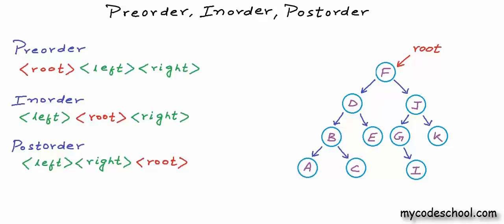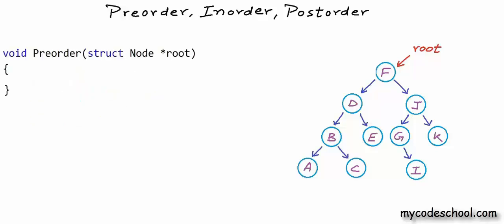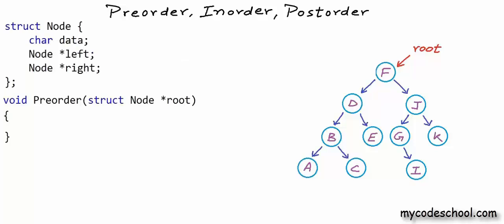Let's first see the code for pre-order traversal. In pre-order traversal, we first visit the root, then the left sub-tree, then the right sub-tree. I want to write a function that takes a pointer or reference to the root node as argument and prints data in all nodes in pre-order. In C or C++, the method signature takes the address of the root node as argument, with the argument type being a pointer to node. I will define node as a structure with three fields: a character data field and two fields for the addresses of left and right children.